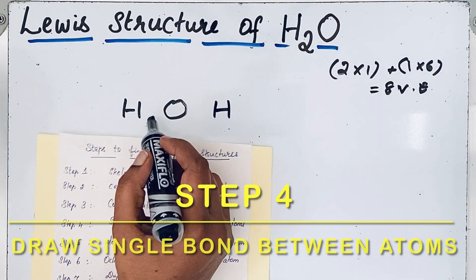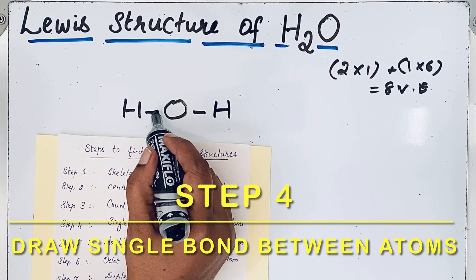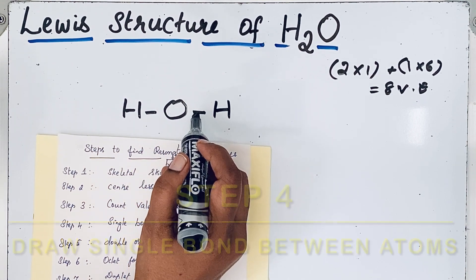Step four: draw single bonds between all atoms. A single bond means there are two electrons involved in the bond formation.